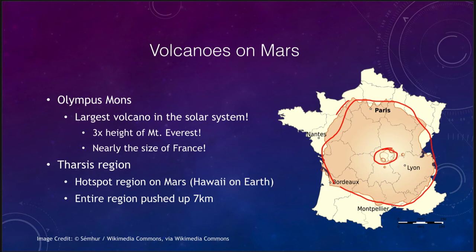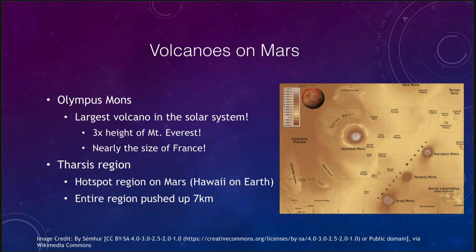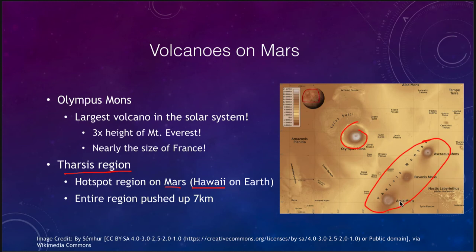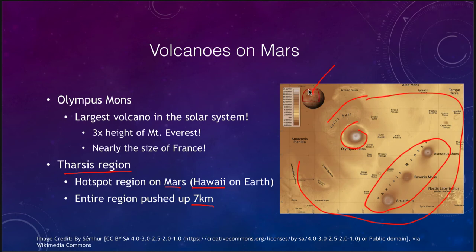The whole region around Olympus Mons is volcanic. The three other volcanoes we saw on the map of Mars are all here, and Olympus Mons is the largest. This entire region is called the Tharsis region — a hotspot region on Mars, very similar to Hawaii on Earth. However, the cluster is not due to plate motion, but rather three separate hotspots, each erupting continually in the same spot. Because of massive pressures underneath, this entire Tharsis region has been pushed up by seven kilometers above the regular surface level of Mars.